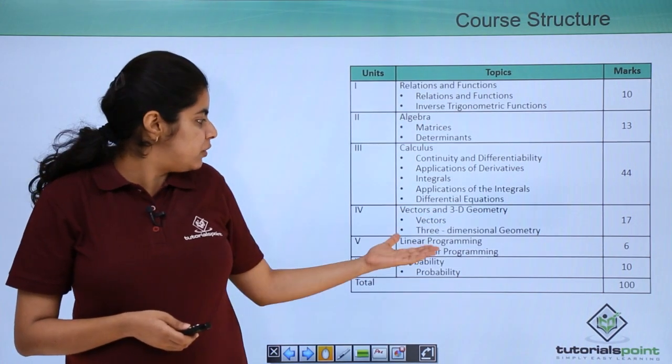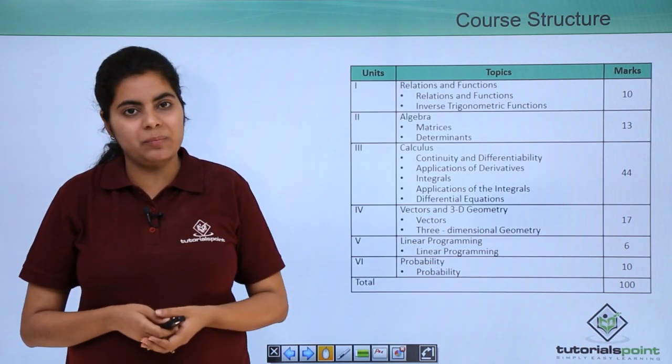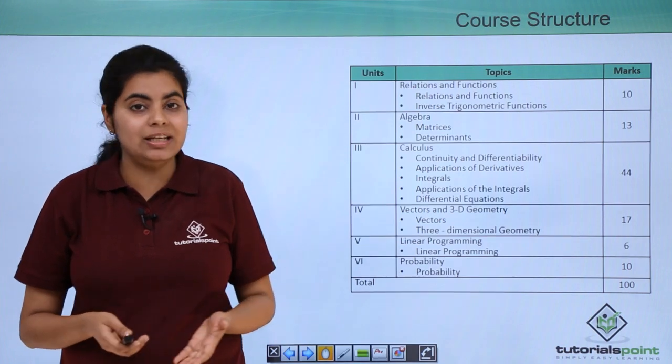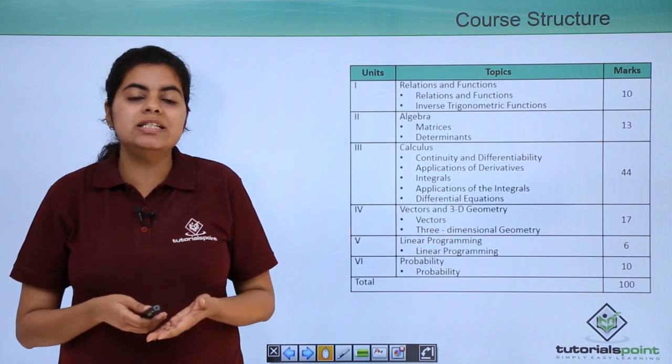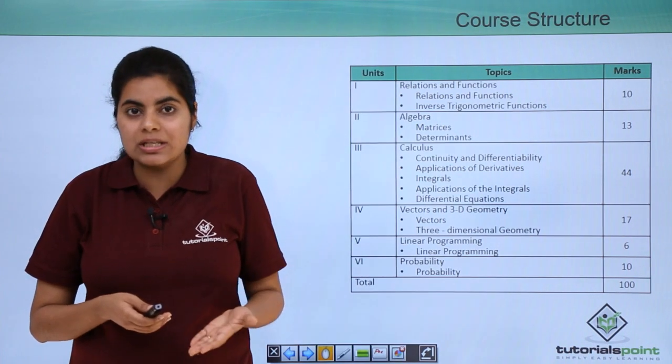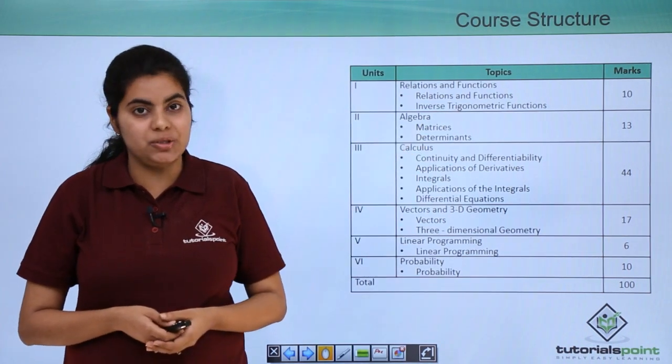Next we come on to the fifth unit which is linear programming. Linear programming is a must do in class 12th. You cannot leave this chapter because it is again one of the easiest chapters, one of the easiest units as well after the study of the unit of algebra.